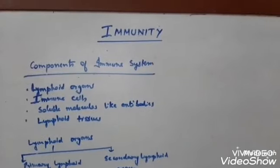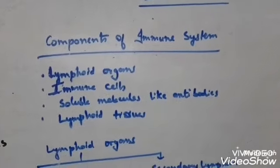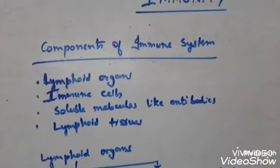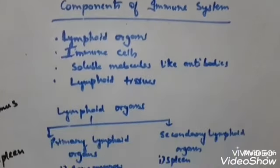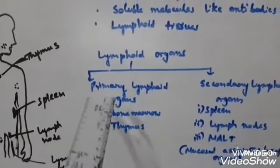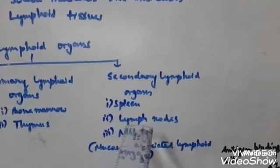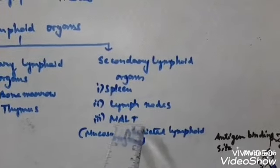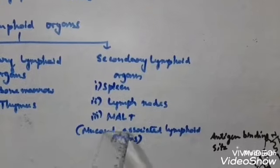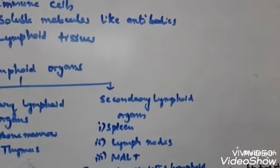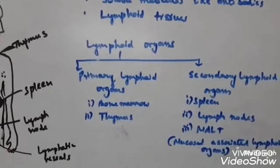We have now reached the last part: components of the immune system. There are four major components: lymphoid organs, immune cells, soluble molecules (like antibodies), and lymphoid tissues. Lymphoid organs are of two types: primary lymphoid organs — bone marrow and thymus gland — and secondary lymphoid organs — spleen, lymph nodes, and MALT (mucosal associated lymphoid organs).